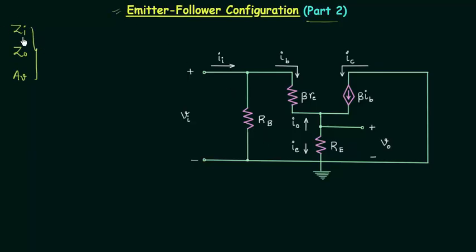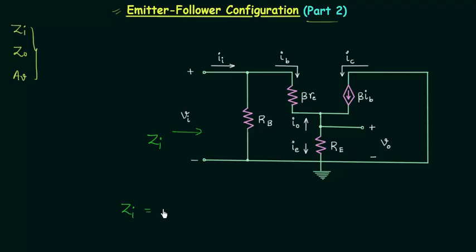Let's start with the input impedance. The input impedance is the impedance seen from the input terminals. So if you see from these two terminals you will find the input impedance ZI. At first sight it seems the input impedance is equal to RB connected in parallel with beta*r_e plus RE, so ZI equals RB in parallel with beta*r_e plus RE.